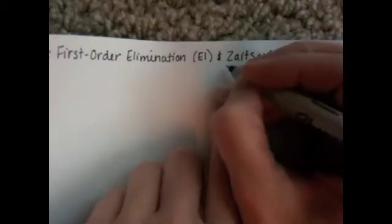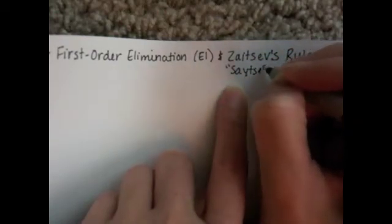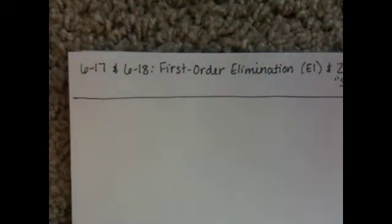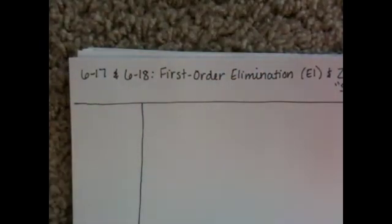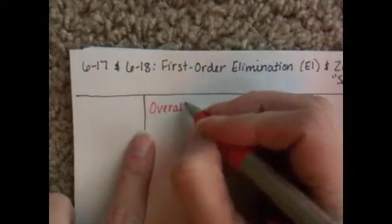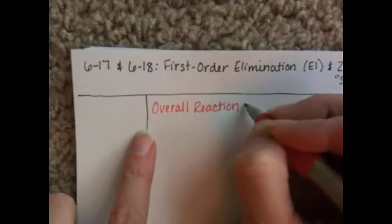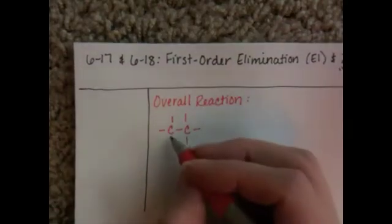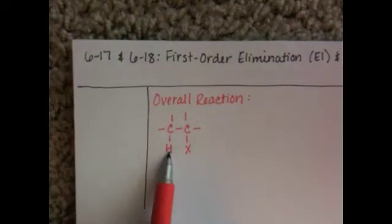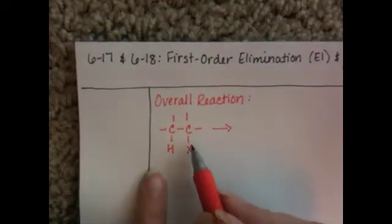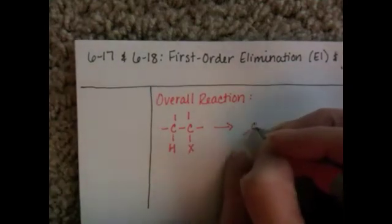Zaitsev's Rule is pronounced Zaitsev's, not with a hard Z. This is a reaction mechanism, and the overall general mechanism for first order elimination requires an alkyl halide with at least two carbon atoms. On those two carbon atoms, you need a side-by-side hydrogen and a leaving group, abbreviated X because it's usually a halogen. In the E1 mechanism, you eliminate the leaving group and the adjacent hydrogen, and you end up with an alkene.